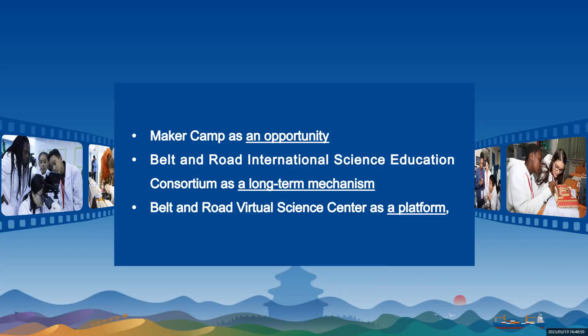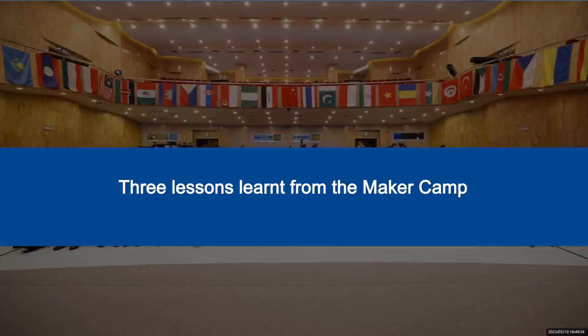Since the organizer gave me this topic, I think the most important thing is our exploration and practice of building a working system of scientific and educational cooperation over many years. We have taken the Maker Camp as an opportunity for young talents from the world to inspire their interest in science, established the Belt and Road International Science Education Consortium as a long-term mechanism to promote experience sharing, and built the Belt and Road Virtual Science Center as a platform for sharing international science education resources. This trinity of activities, mechanisms, and platforms feeds back into each other, forming an organic circle of science education development.